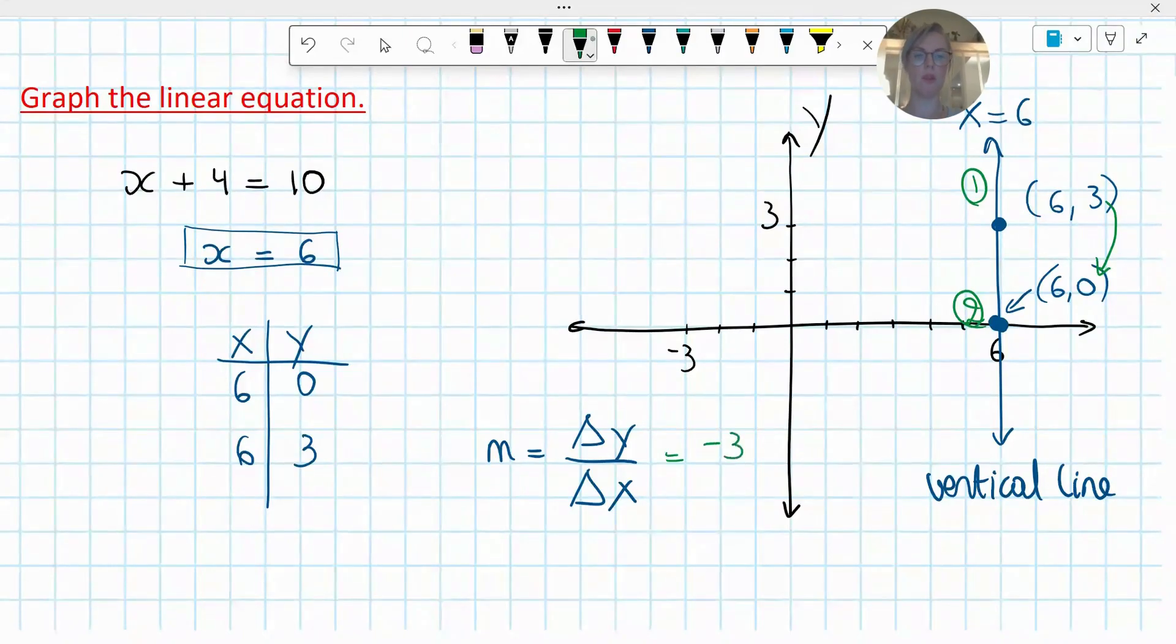And then how much is the x changing from 6 to 6? That's 0. So what do we get when we have 0 in the denominator? Undefined.